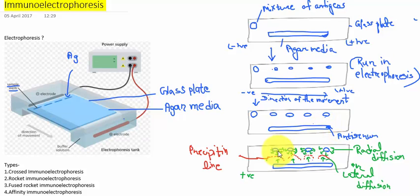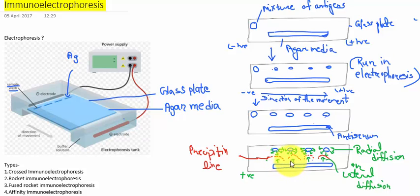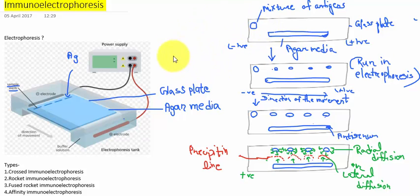In the next step, the antigens start diffusing radially — that means in all directions — but the antiserum present in this area diffuses only in the lateral direction. So in the next step, you can see a visible line called the precipitin line, where you can detect the antigen. This is a kind of antigen-antibody reaction.